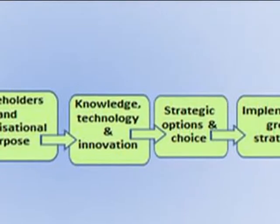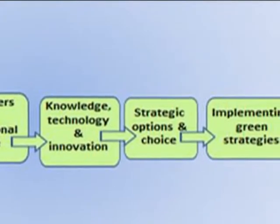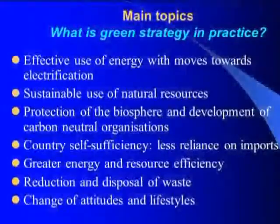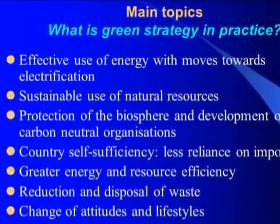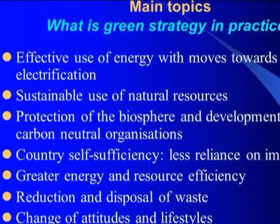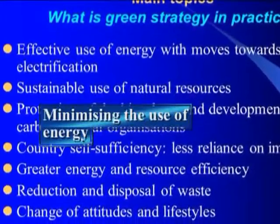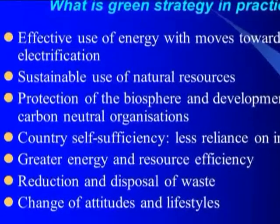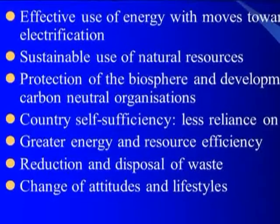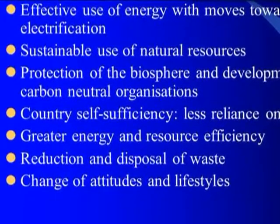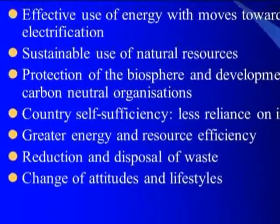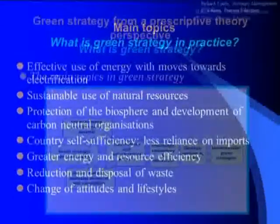This chapter uses the book's prescriptive strategy process model to examine the various topics. The underpinning principles in this list seek to minimise the use of energy — for example, through effective waste management — and also conserving the earth's resources. Importantly, it places much emphasis on changing people's attitudes to sustainability. We all need to do more, including companies.